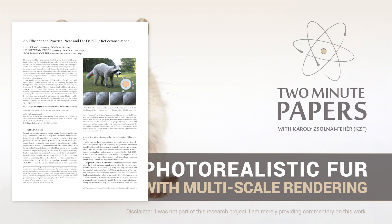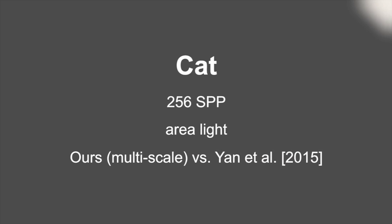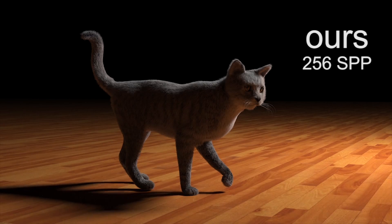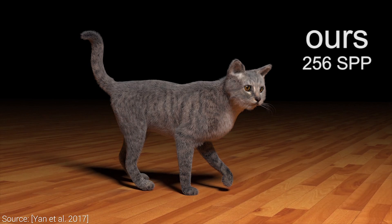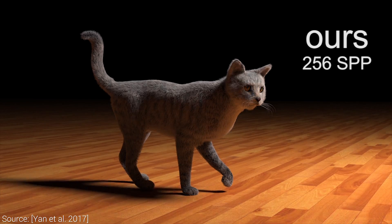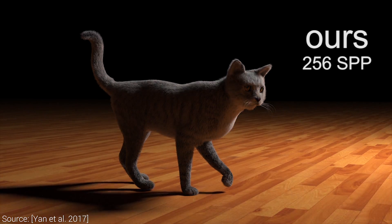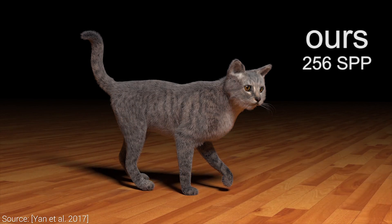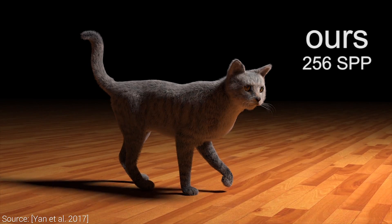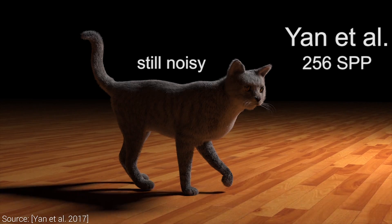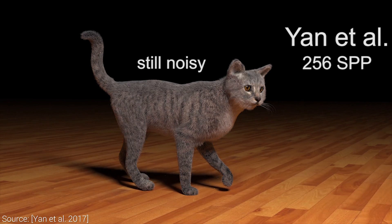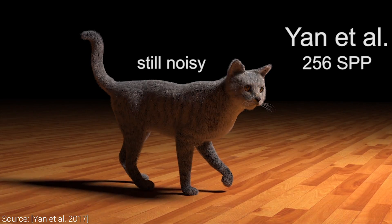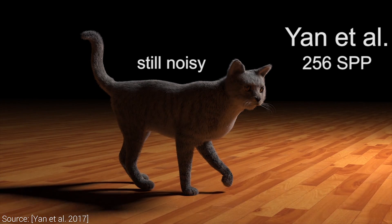Dear Fellow Scholars, this is Two Minute Papers with Károly Zsolnai-Fehér. Creating a photorealistic image with fur and hair is hard. It is typically done by using light simulation programs where we use the laws of physics to simulate the path of millions and millions of light rays as they bounce off of different objects in the scene.